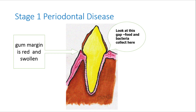This is stage 1 periodontal disease and the only thing different from stage 0 is that there is plaque on the crown of the tooth. This plaque causes inflammation, redness, swelling and pain of the gum margin. Because of this, a gap will develop where the gum touches the crown of the tooth, and food particles can accumulate here while plaque bacteria get into the sulcus.